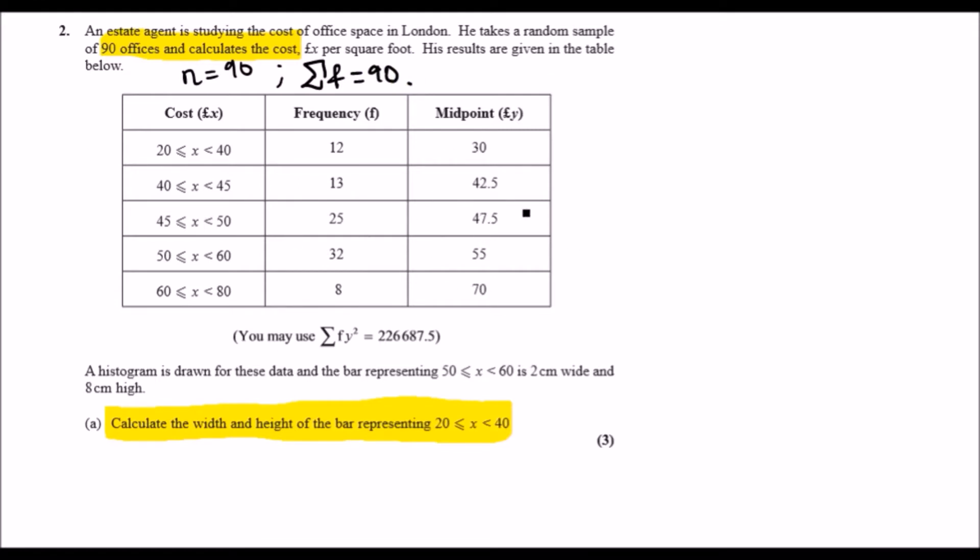Now you're given some more data. You're given the midpoint value of y. They've already done the midpoint for us, which is nice of them. And they've already gone ahead and calculated the sum of f times y squared. They'll calculate y squared here and just multiply them across and found the sum of it. This would be useful for calculating standard deviation and various stuff. Anyway, back to the problem.